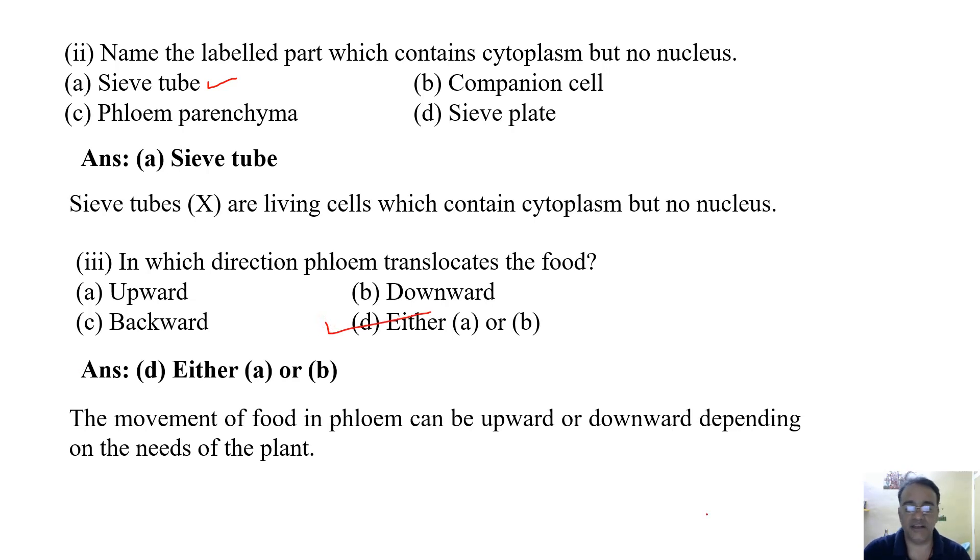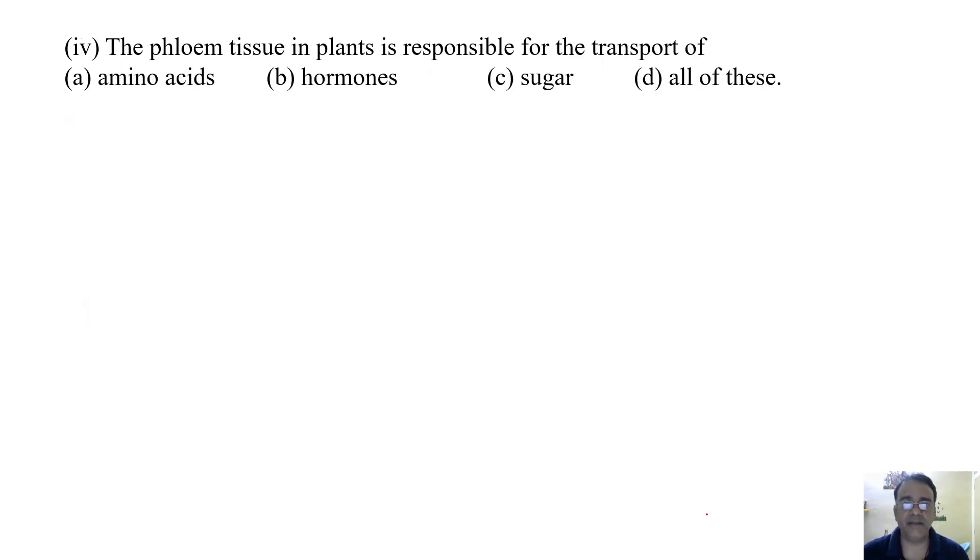Now the second last question. The phloem tissue in plants is responsible for the transport of amino acids, hormones, sugar, or all of these. All of these. Actually the phloem translocates the food, that is sugar made in the leaves.